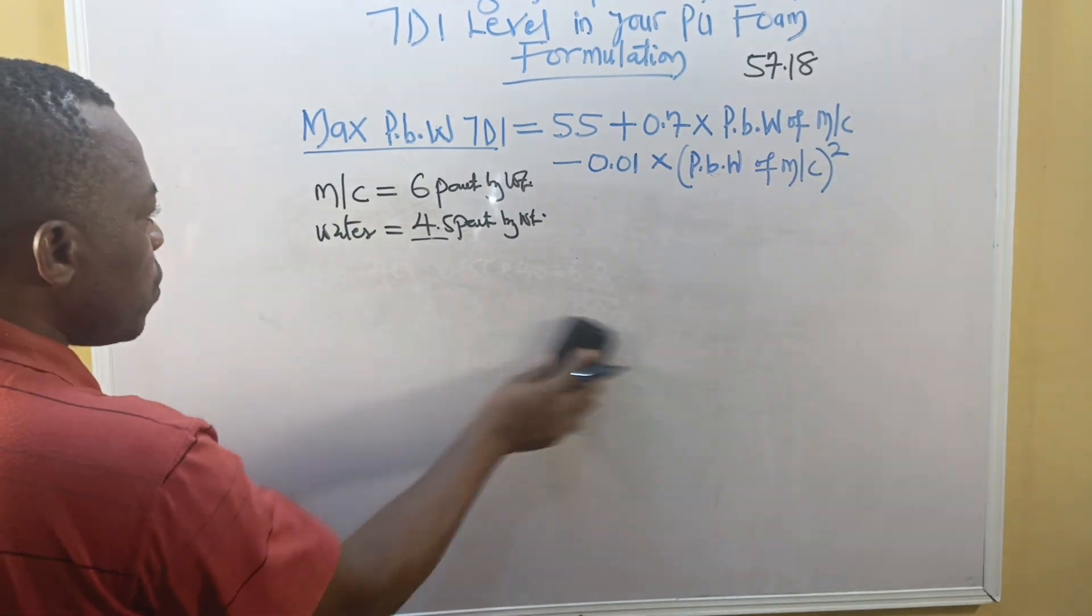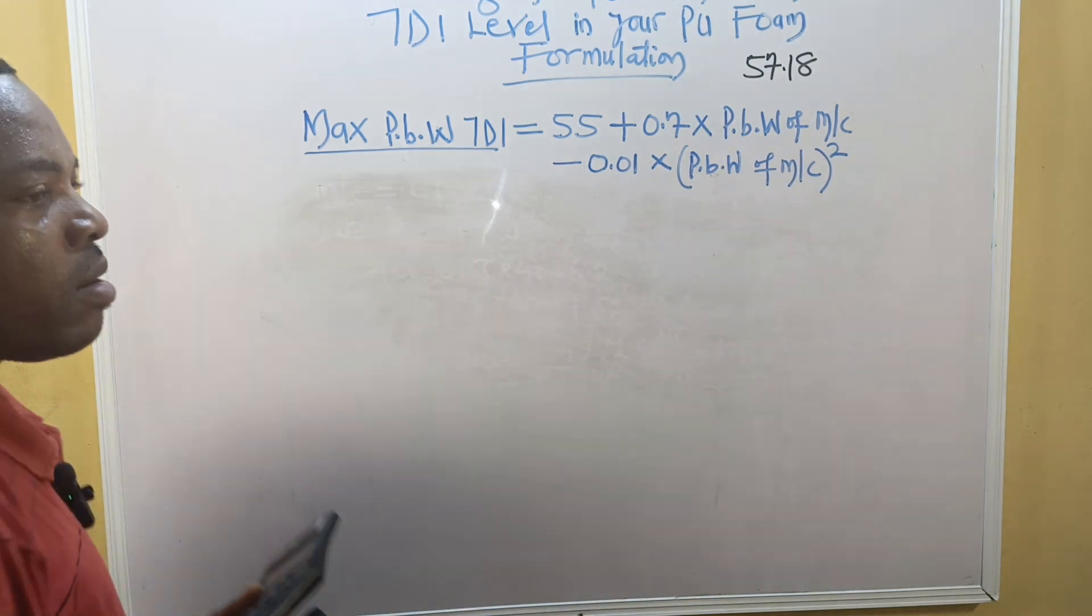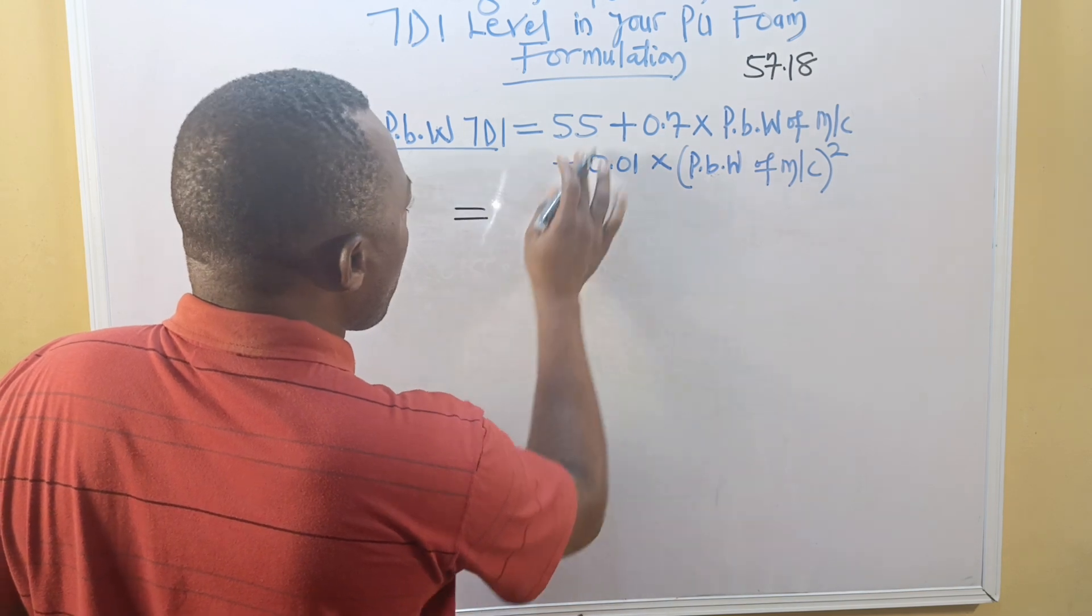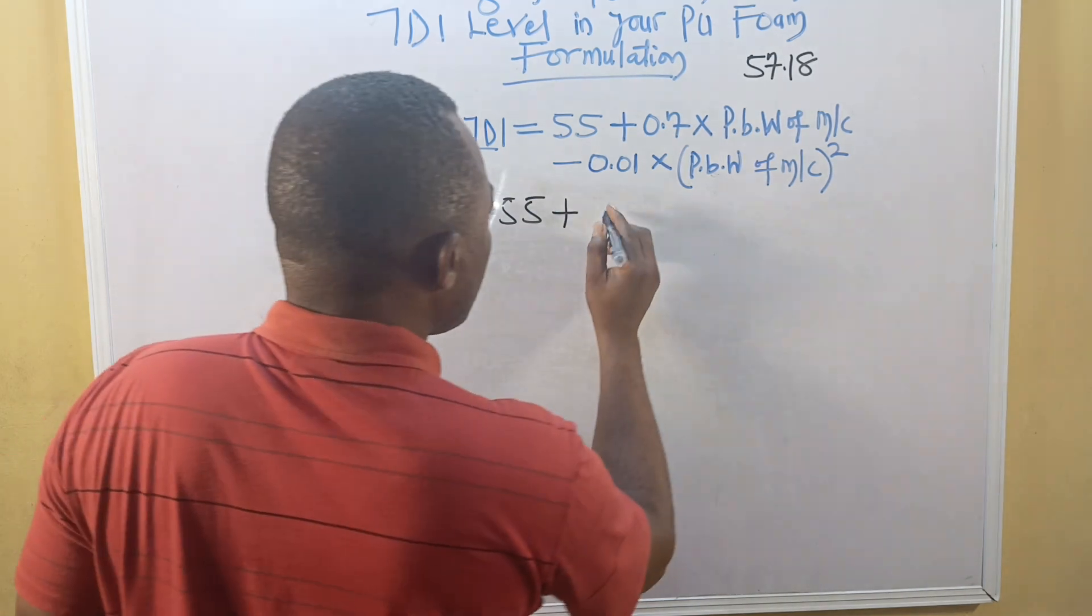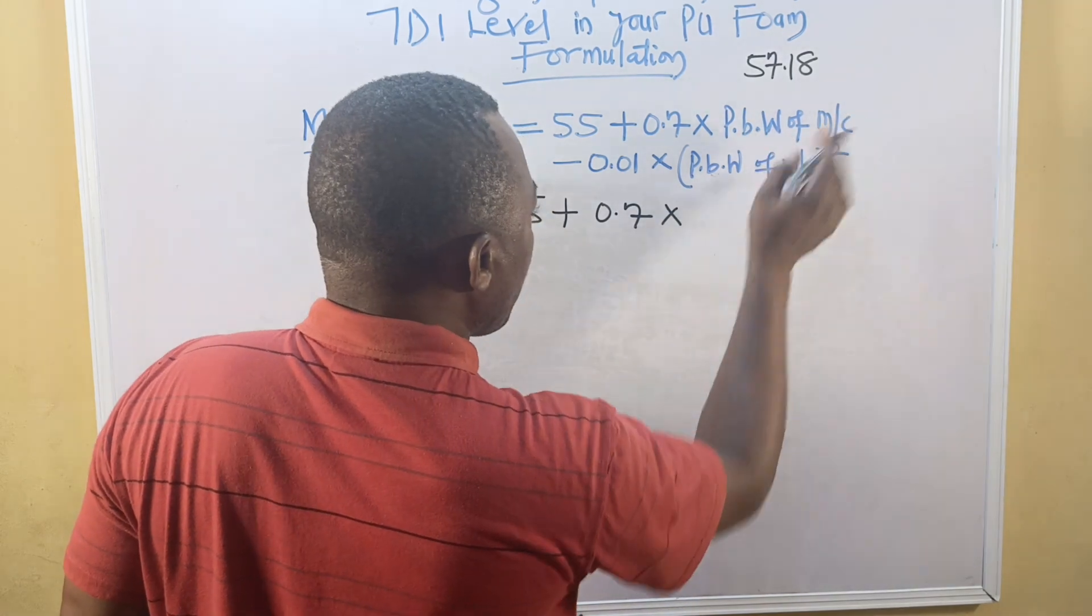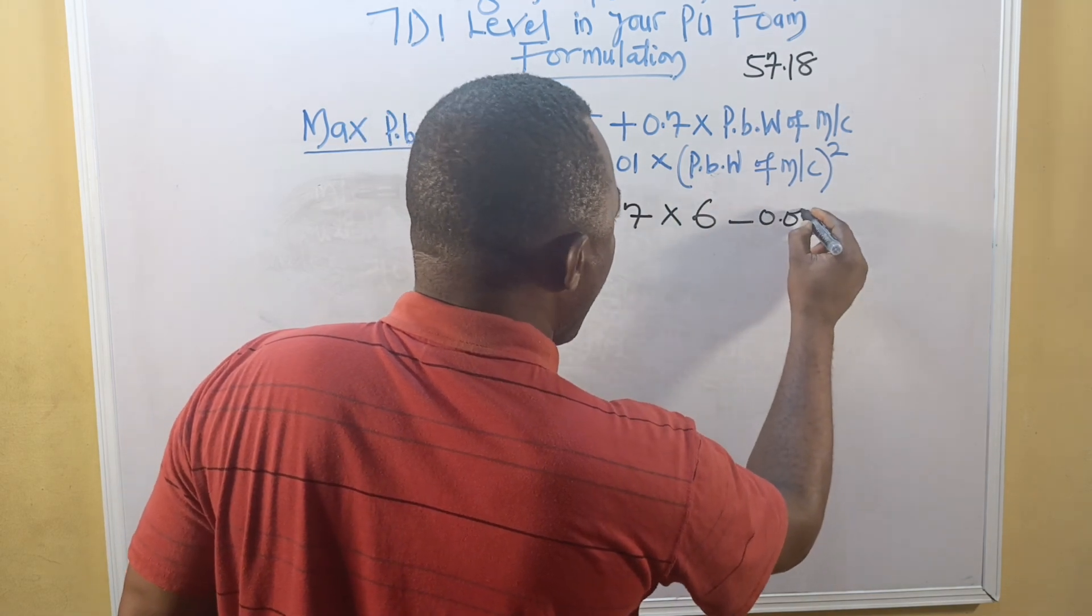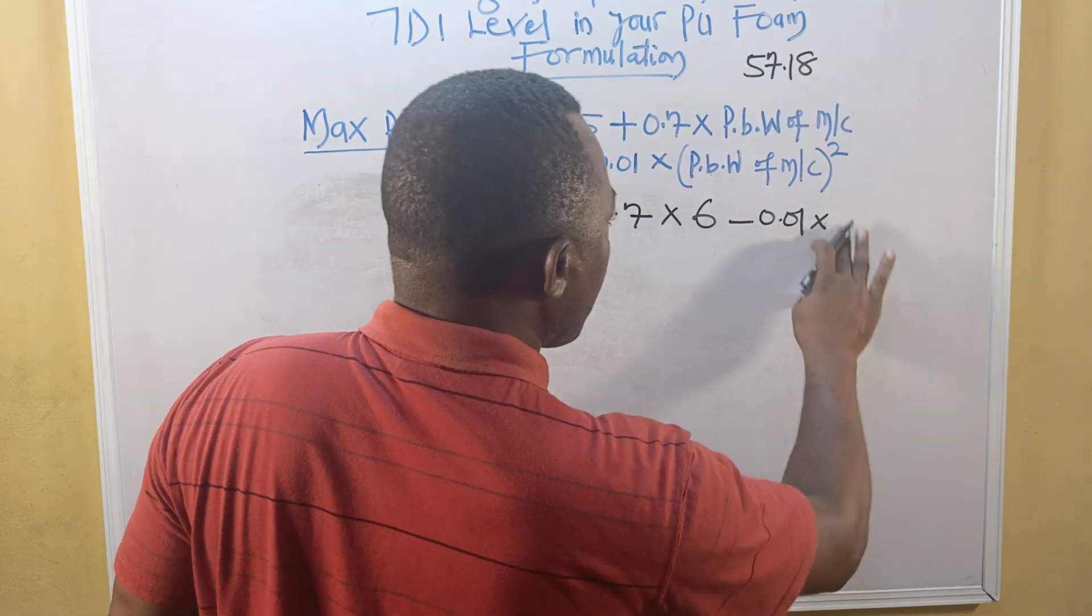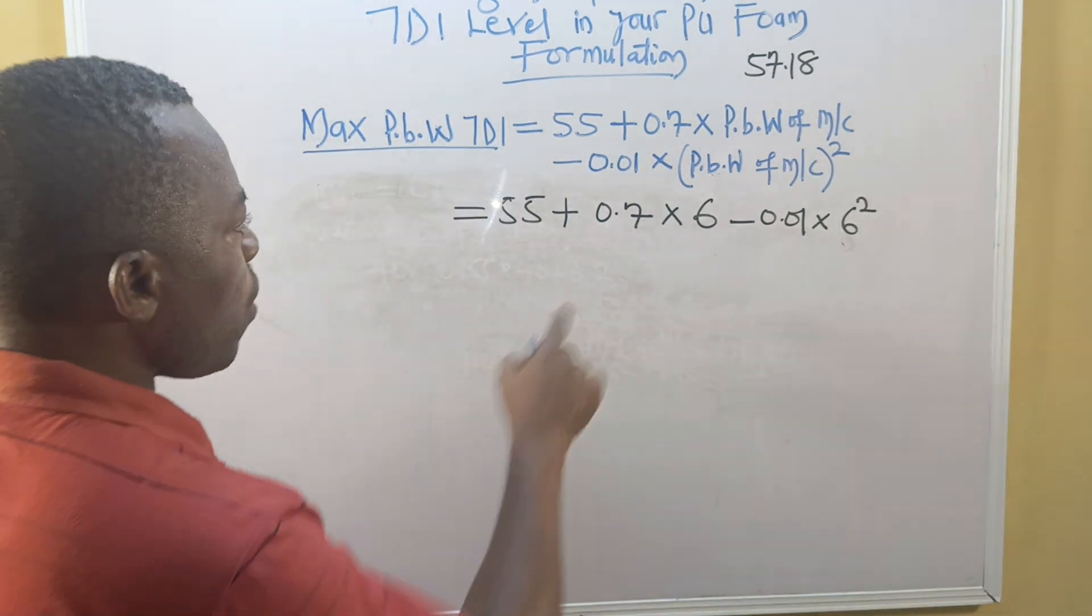The reason you are going to compare this with the maximum in respect to MC is to see whether your foam formulation is safe for use. Let's write this: 57.18. We are going to use the MC, which is 6 parts.